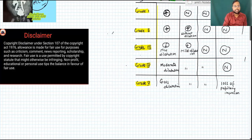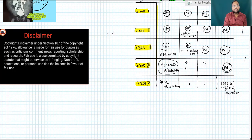In Grade 4, there is moderate dilatation of the ureter and renal pelvis, and it involves the calyxes as well. However, the papillary impression remains normal in Grade 4.